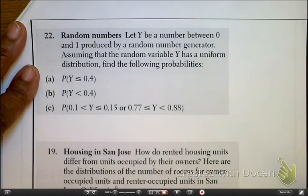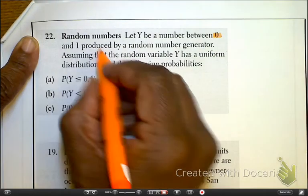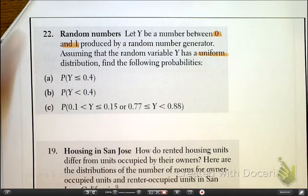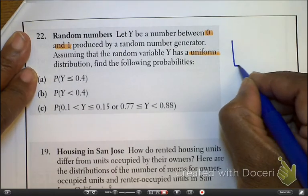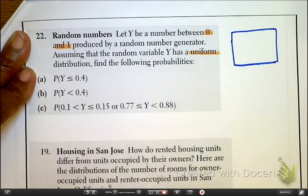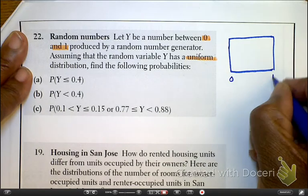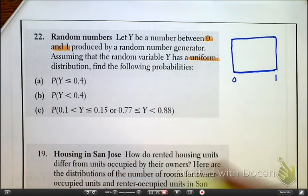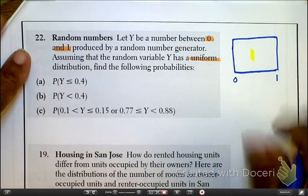I mentioned this before, so I apologize for the redundancy. Given that they said we have values Y produced between 0 and 1, it's a uniform distribution, we're talking about literally that this is going to be a square. So here's 1, here's 0, here's 1, and we know the area under this curve has got to equal 1. So with that being said, 1 times 1 is 1.